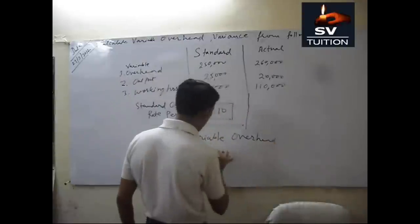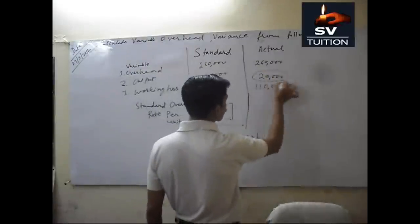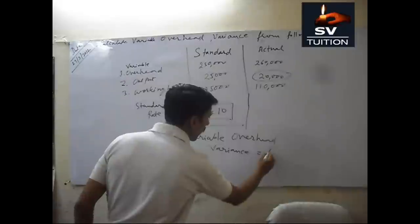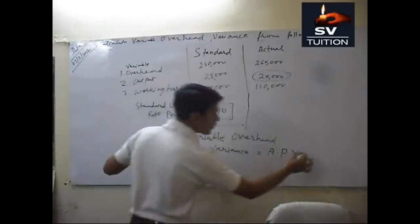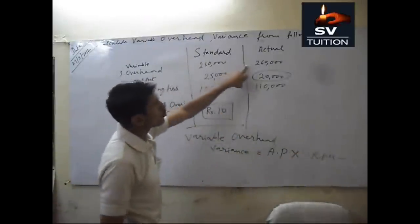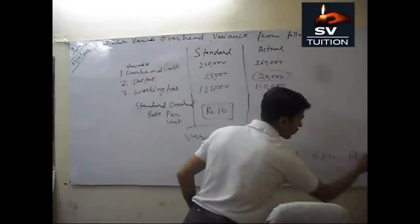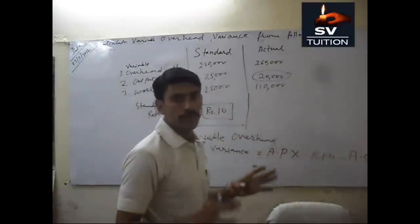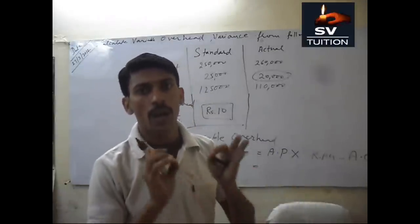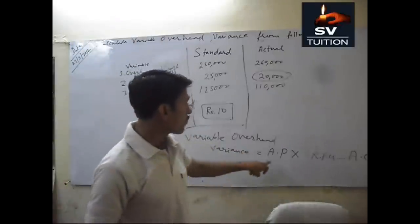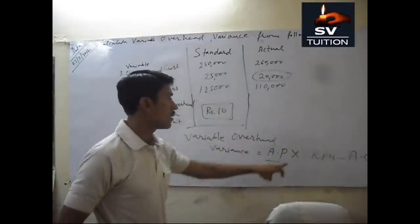Now we will calculate variable overhead variance. The formula is: actual production multiplied by standard rate, minus actual overhead cost. It is a very simple formula. If you want to calculate variable overhead variance, you calculate the multiplication of actual output with the standard rate of overhead per unit, minus actual total overhead cost.